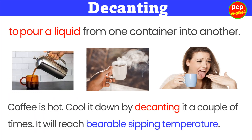What is the meaning of decanting? Decanting means to pour a liquid from one container into another. Example: Coffee is hot — cool it down by decanting it a couple of times and it will reach a bearable sipping temperature.